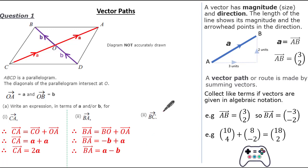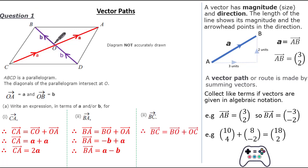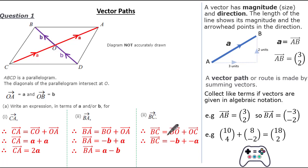Finally, let's have a look at our vector BC. How are we going to get from the vertex B to the vertex C? Let's identify our vector path: we can go from B to O and then O to C. Remember we're going in the opposite direction of OB, so therefore it's minus b, then the opposite direction to C to O, so it's minus a. Summing this up gives us vector BC is simply minus a minus b.